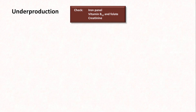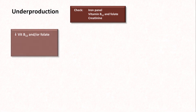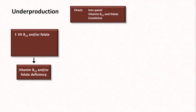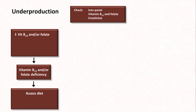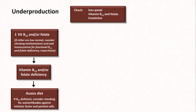Next are a few less common etiologies of underproduction. If B12 and/or folate are low, then you probably have at least part of the diagnosis, but now need to figure out why. This includes assessing their diet, and specifically in the case of B12 deficiency, consider checking for autoantibodies against intrinsic factor and/or the parietal cells of the stomach. If either B12 or folate are in the low normal range, one can consider checking levels of methylmalonic acid and homocysteine to identify functional B12 and folate deficiency respectively — when the patient technically has a normal value but manifests symptoms or signs of deficiency that improve after vitamin supplementation.